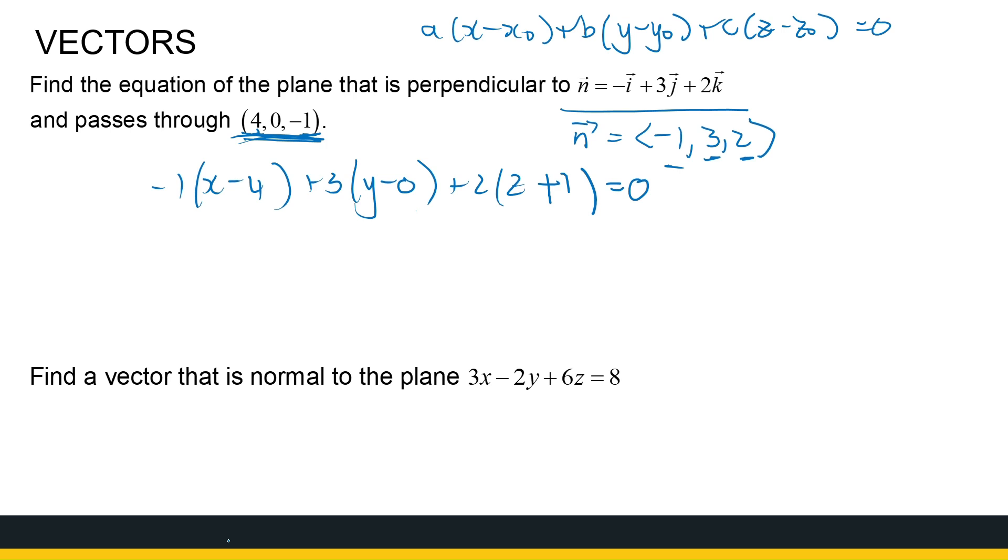So if we multiply this out and tidy it up a little bit, we'll get -x + 3y + 2z. And here I've got 4 + 0 + 2, 2 times 1 is 2. So 4 + 2 is 6. So +6 equal to zero. Or we can write it as -x + 3y + 2z is equal to -6. So there's the equation of this plane. And what did we need? We needed a point and a vector perpendicular to the plane.